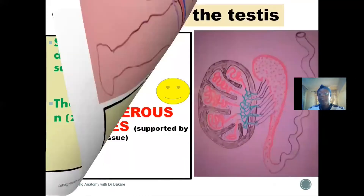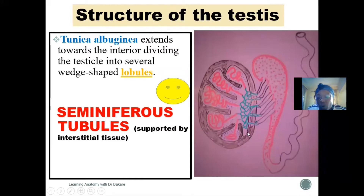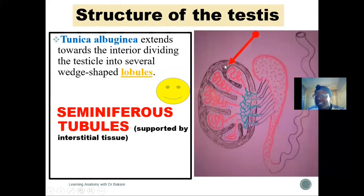The major structure seen within the testes is the seminiferous tubules — a tubular network arranged within the testes. But first, let's look at the tunica albuginea, which is a fibrous capsule that encloses the entire testes and drives into the substance of the testes, dividing it into lobules.